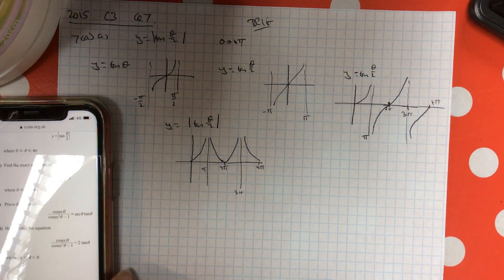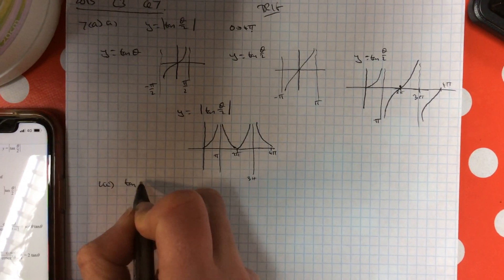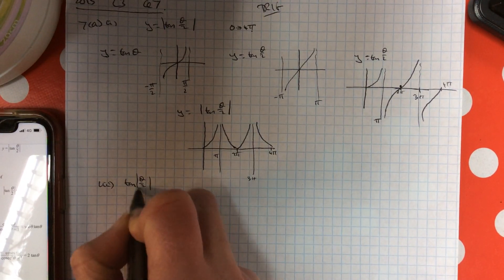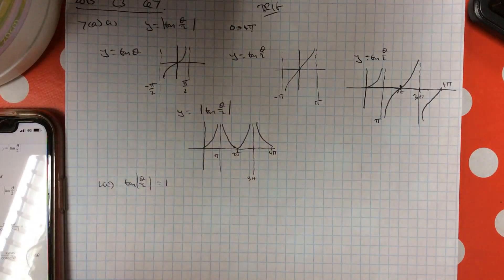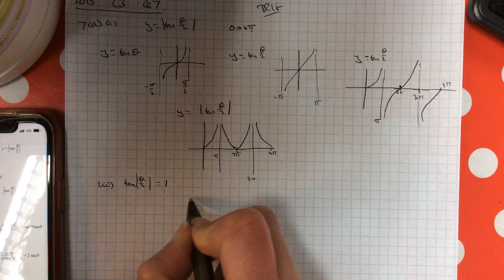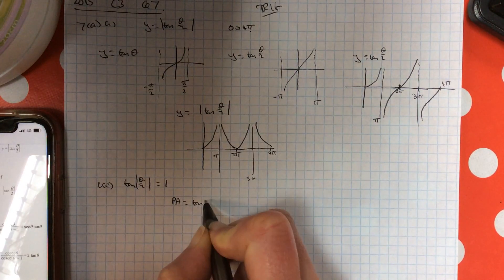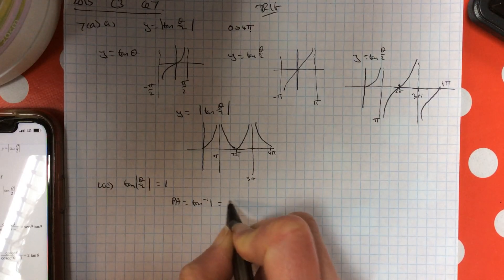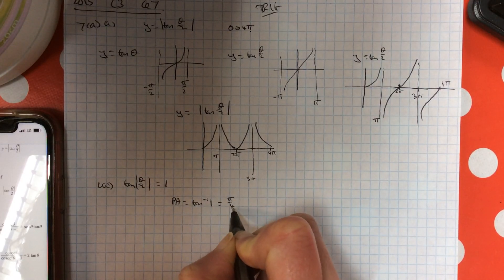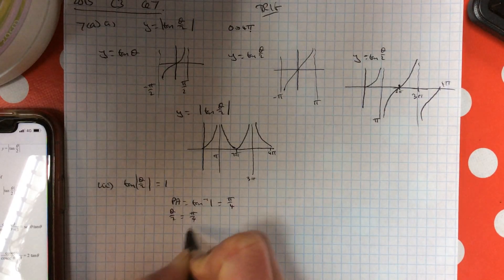Part 2 of this question: find the exact solutions of when tan theta over 2 equals 1. So if you do your basic angle in here, or principal angle, inverse tan of 1 is your 45 degrees, which is pi over 4. So basically theta over 2 is pi over 4.